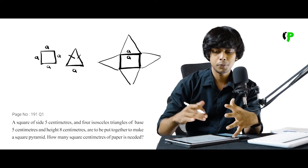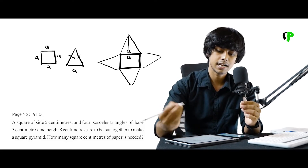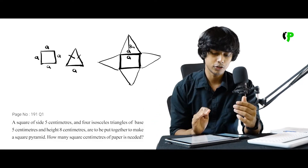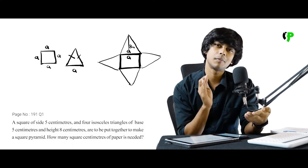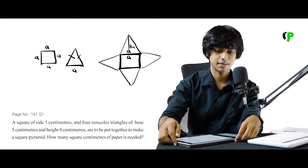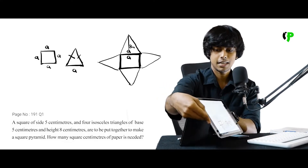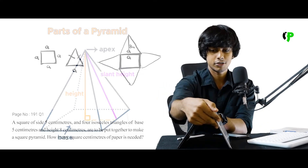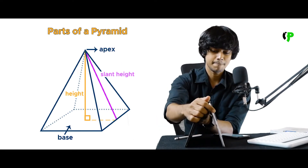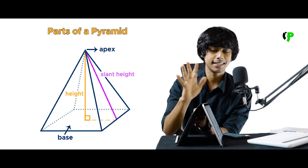Now let's learn a different way. We have the height of the triangle — do you know the height? It is 8 cm. The height of the triangle is 8 cm. But we don't have the slant height directly. So I'm going to explain a different approach. Look at this — the height is the vertical height.